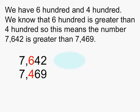We have one number with 600, and another with 400. We know that the 600 is greater than 400, so this means the number 7,642 is greater than 7,469.